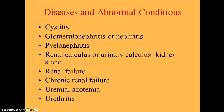Some of the diseases and abnormal conditions of the urinary system or the excretory system. The first one is cystitis. Notice the '-itis' suffix. We also have glomerulonephritis, pyelonephritis, and urethritis. Remember, '-itis' means an inflammation or infection of. Cystitis is an inflammation of the bladder.